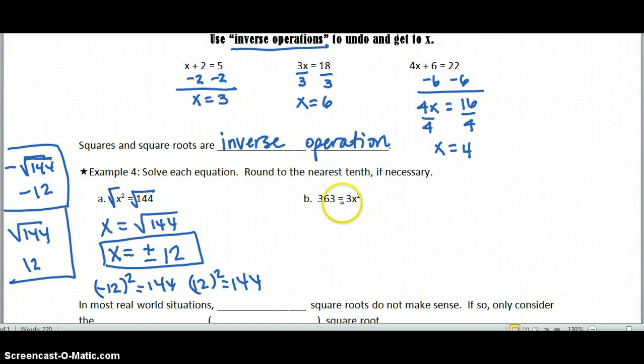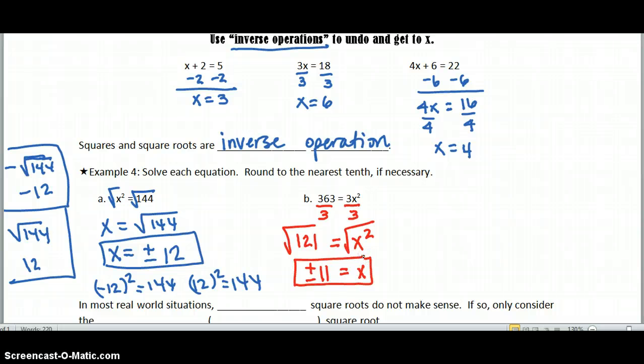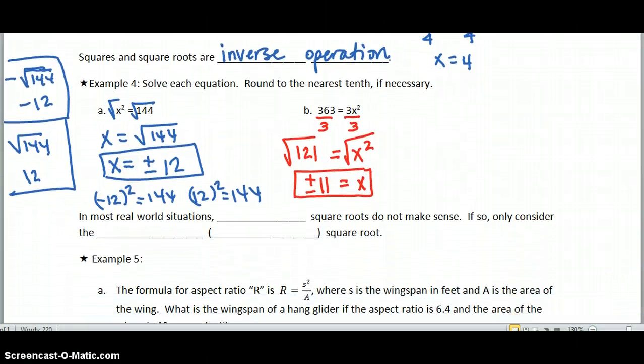For this next problem, I have to do two steps. First, I have to get my x isolated. So what's happening to x squared? It's being multiplied by 3. So I need to divide by 3. And that will let us have x squared equals 121. Now, to undo x being squared, I'll take the square root. So I have to do the same thing to both sides. And I get x equals positive or negative 11. Please do not forget that it's got to be positive or negative, because negative 11 squared is also positive 121.